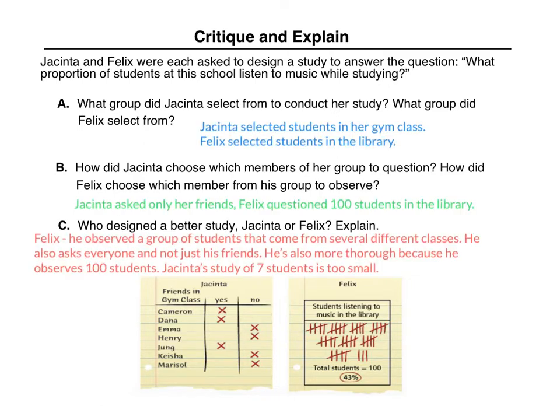Jaquinta selected seven students in her gym class to ask if they listened to music while studying, and Felix selected students in the library. He observed 100 total students in the library and tallied that 43 of those students listened to music while they were studying. How did Jaquinta choose which members of her group to question? Jaquinta asked only her friends — seven of her friends in the gym class — whereas Felix questioned 100 students in the library.